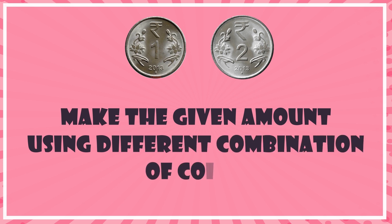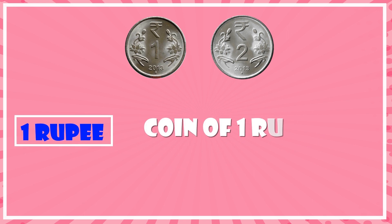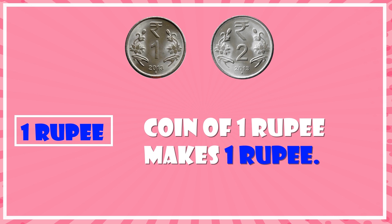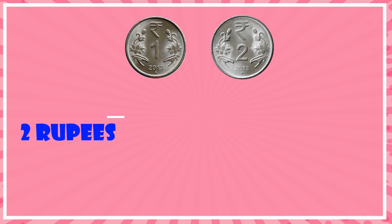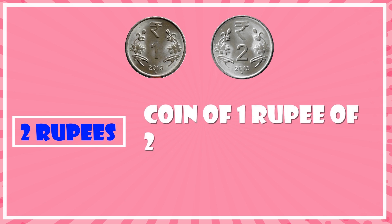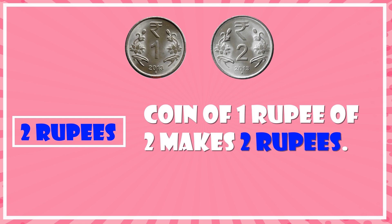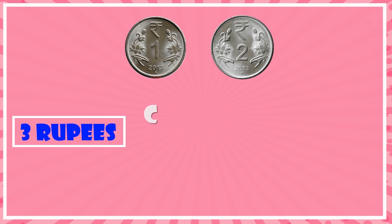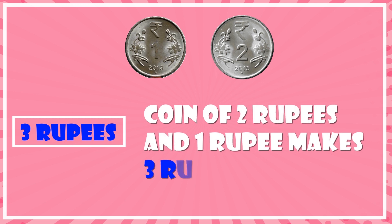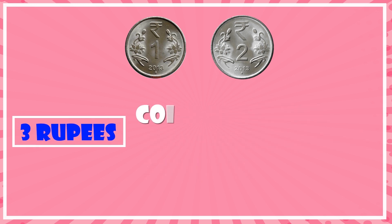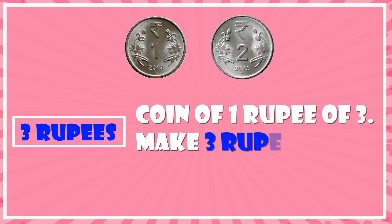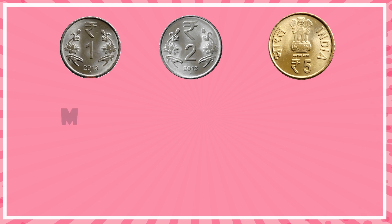One coin of one rupee makes one rupee. One coin of two rupees makes two rupees. Three rupees: a coin of two rupees and one rupee makes three rupees. Three rupees: three coins of one rupee makes three rupees.